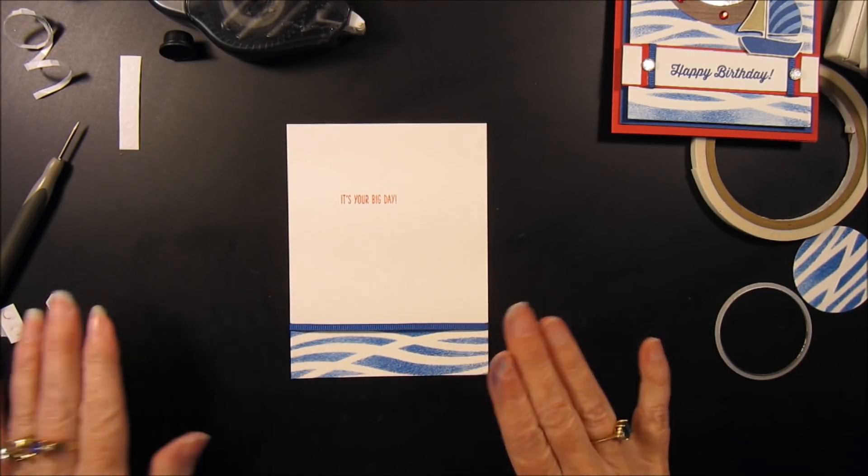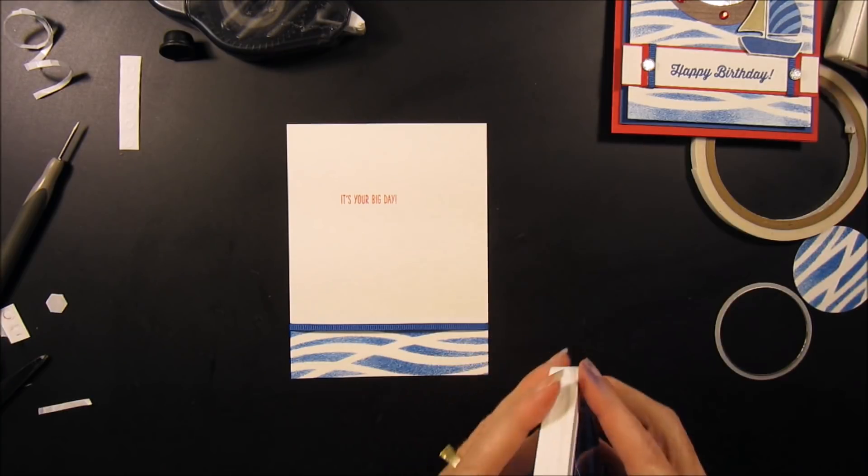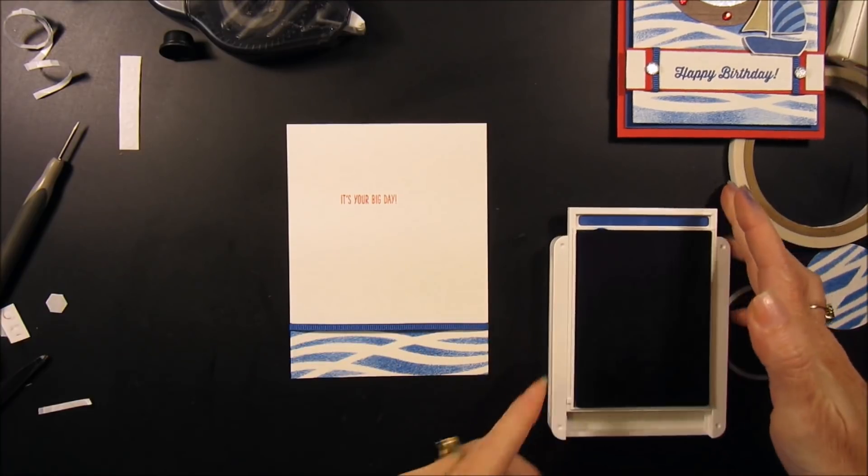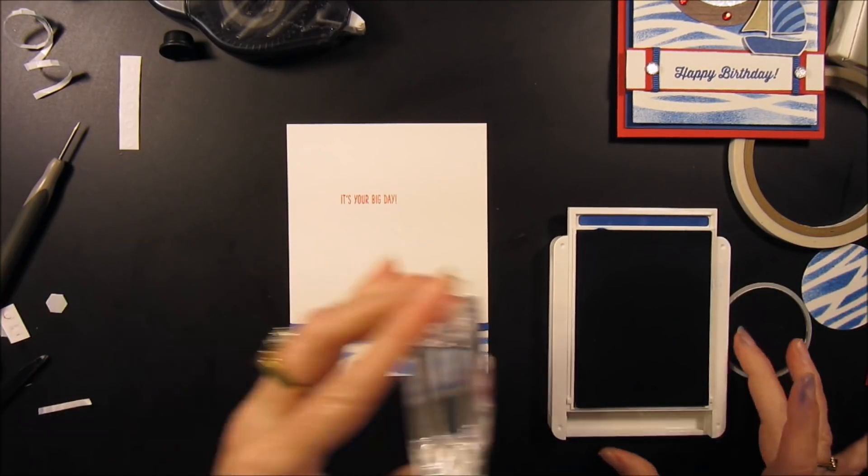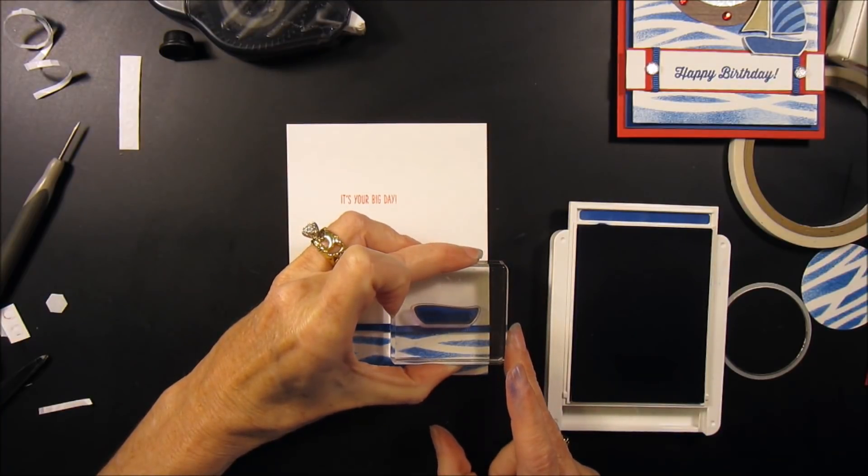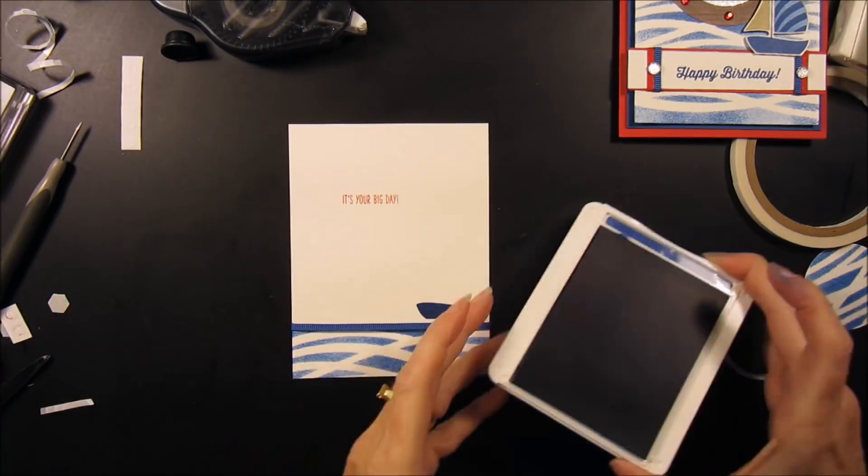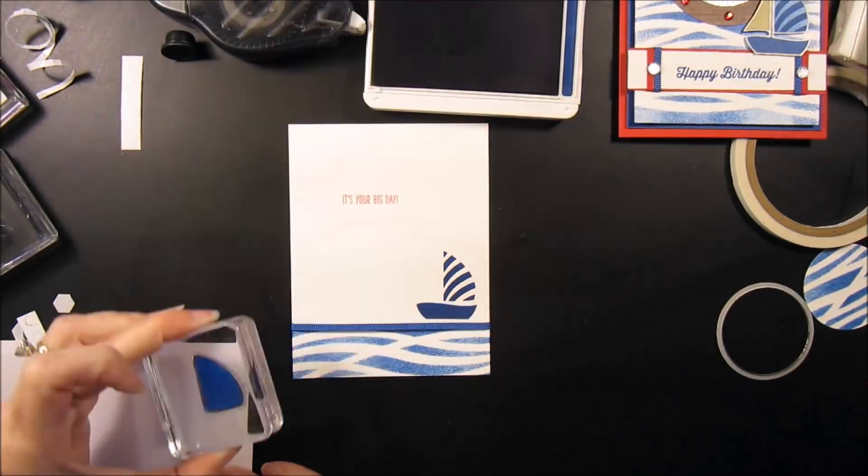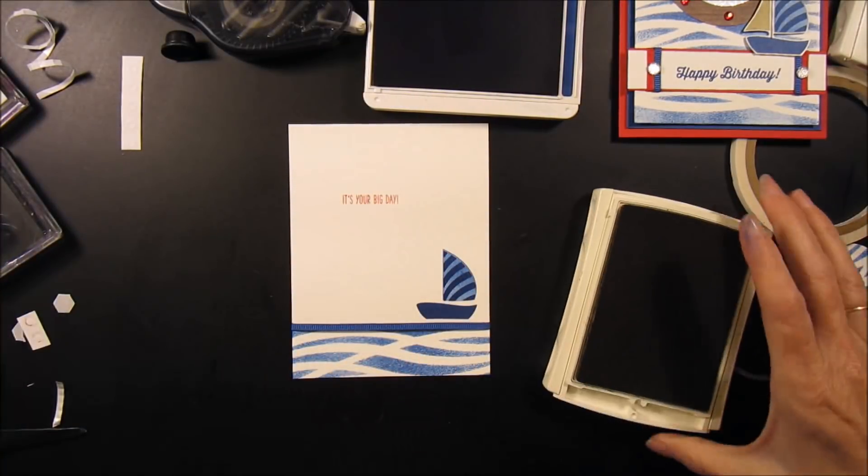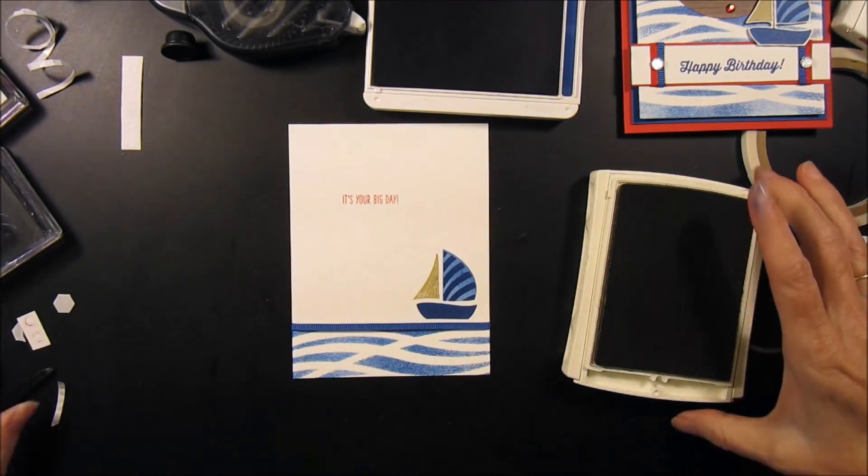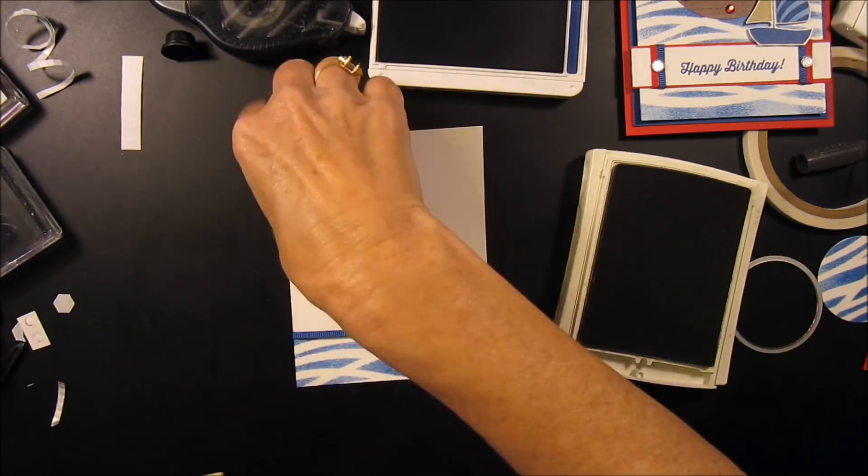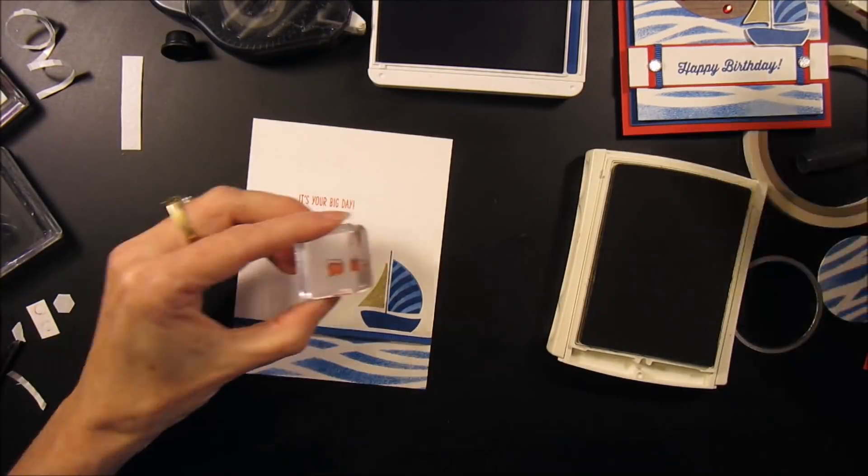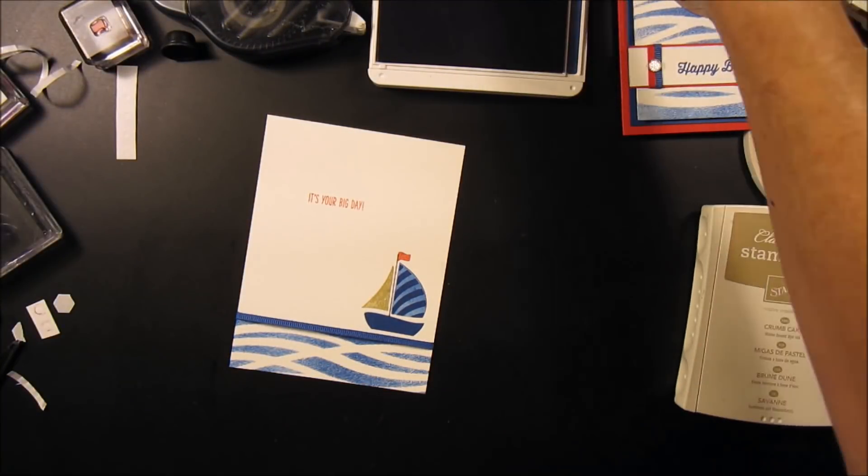And then we need to stamp another boat on the inside of the card. So we'll do that real quick. So again, start with the base.